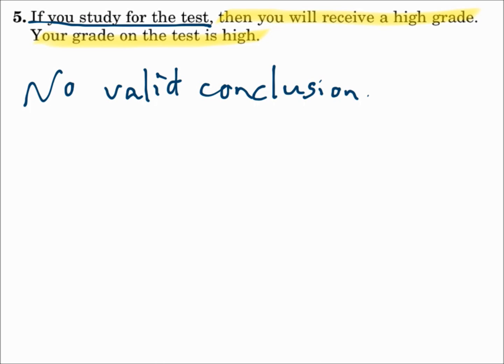Syllogism says if P goes to Q, and Q goes to R, then P goes to R. If you're hungry, then you eat. If you eat, then you pay for your food. If you're hungry, then you pay for your food. P to Q, Q to R, and P to R.